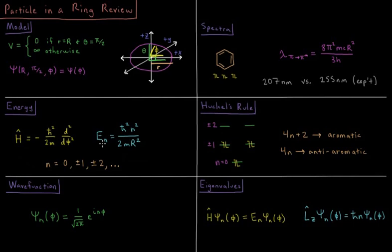And our energy levels then are going to depend on a quantum number n, which can be any integer, positive or negative, which is going to be equal to h-bar squared n squared over 2m r squared.